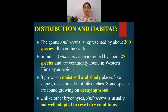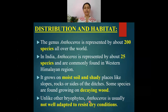The habitat of most bryophytes is moist — they prefer moist soil and shady places, like other genera such as Riccia and Marchantia. Members of the Anthoceros genus are also found growing on decaying wood.